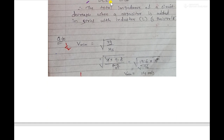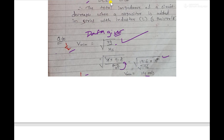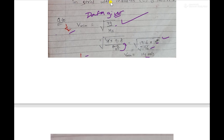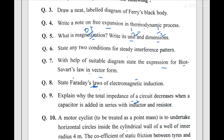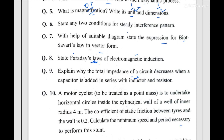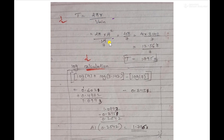For numericals, I suggest a proper method: first write the formula, then write the given data. If some standard data is given — like speed of light or Planck's constant — you can consider and copy it into your answer sheet. For question 10C, write V-minimum, then the formula carries half marks, and one mark will be credited if the answer is correct. They have also asked to calculate the minimum speed and time period — write the formula, then solve it.